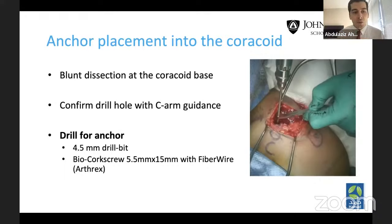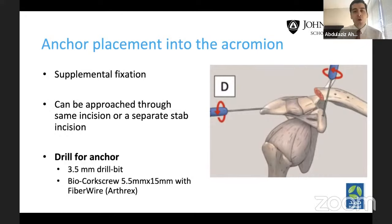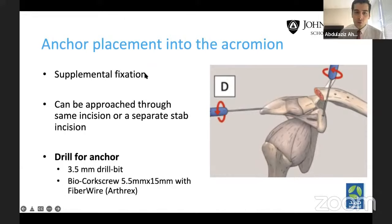We use a 4.5 mm drill bit and our preference is a biocore 5.5 screw anchor with FiberWire. We drill the coracoid and insert an anchor there, plus a supplemental anchor into the acromion. Our aim is to achieve both acromial and coracoclavicular fixation: one anchor from the coracoid to the clavicle, and another from the acromion to the clavicle. This supplemental acromial fixation is not described as standard in the literature, but it is our preferred technique and can be done through the same extensile flap or through a separate stab incision.